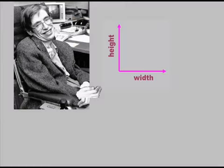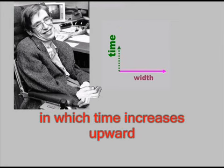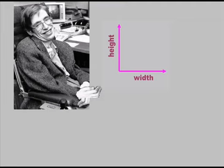Likewise, Hawking sees no problem when he casually replaces the dimension of height with time in what he calls a space-time diagram: 'I shall generally use diagrams in which time increases upward and one of the spatial dimensions is shown horizontally.' Is it rational to substitute height with time? Does time run perpendicular to width? It is absolutely stunning to realize that the mathematicians confuse time for a dimension and call it a coordinate.